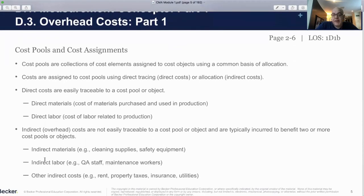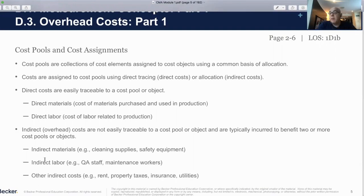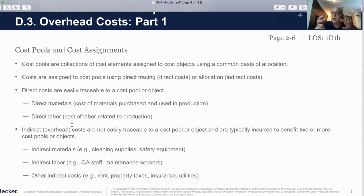Cost pools are collections of cost elements assigned to cost objects using a common basis of allocation. We only need that because we are not able to track the cost directly to the product — therefore they are classified as indirect costs. Your direct material and direct labor are directly traceable to the cost object, which is the sandwich. We need the cost object because we need pricing — we need to know that our sandwich is costing $5 so we can sell it at a certain markup, otherwise we might end up losing money.